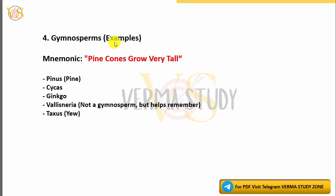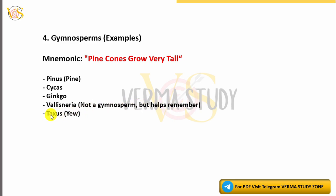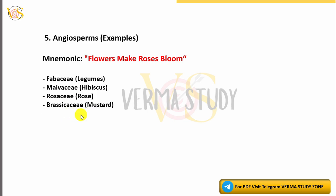4. Gymnosperms Examples Mnemonic: 'Pine Cones Grow Very Tall.' Examples include Pinus (Pine), Cycas, Ginkgo. Note: Vallisneria is not a gymnosperm but helps remember Taxus.